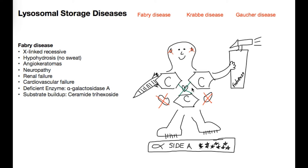Next on the list is hypohidrosis, which means that patients with Fabry disease don't sweat. To represent that, I have little water droplets drawn on his head with X's drawn through them. That helps remember that hypohidrosis means little to no sweating.